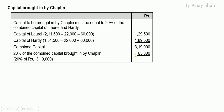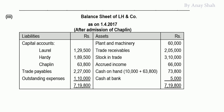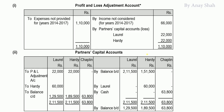Chaplain brings in 63,800 as capital. Entry: Cash account debited; Chaplain's capital account credited 63,800. Cash account increases by 63,800 and Chaplain's capital account balance becomes 63,800. With this, the capital accounts are complete and the P&L Adjustment account is also complete.